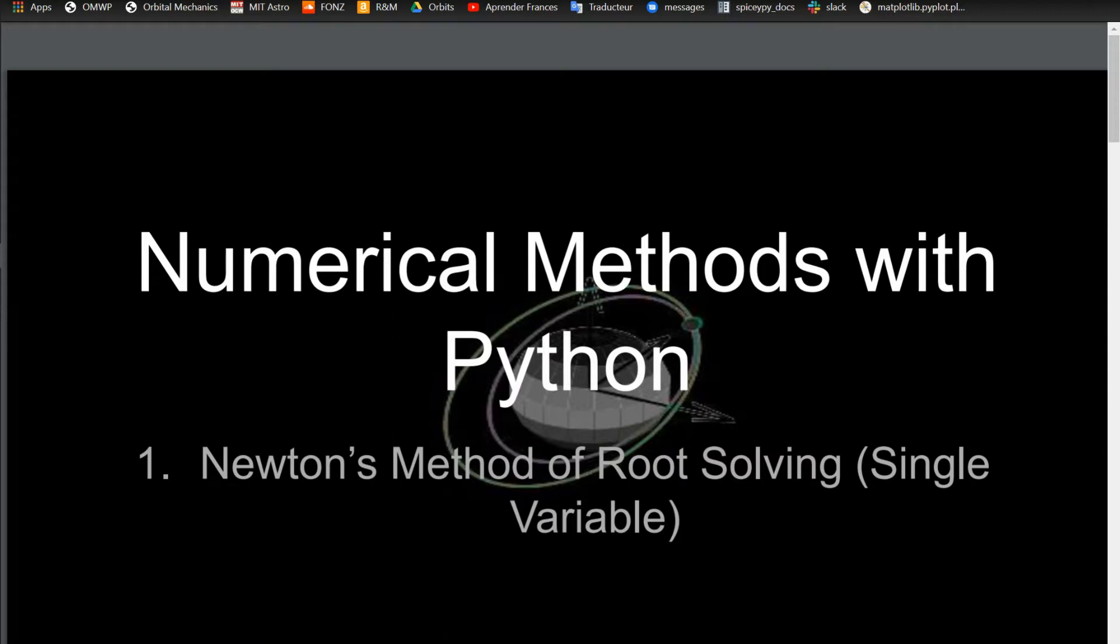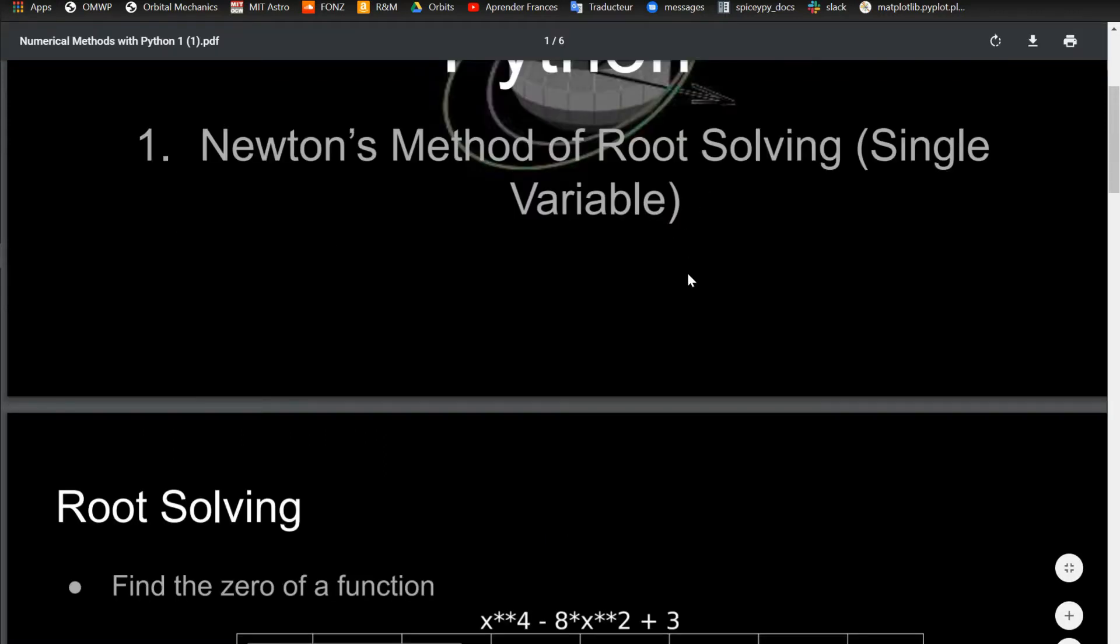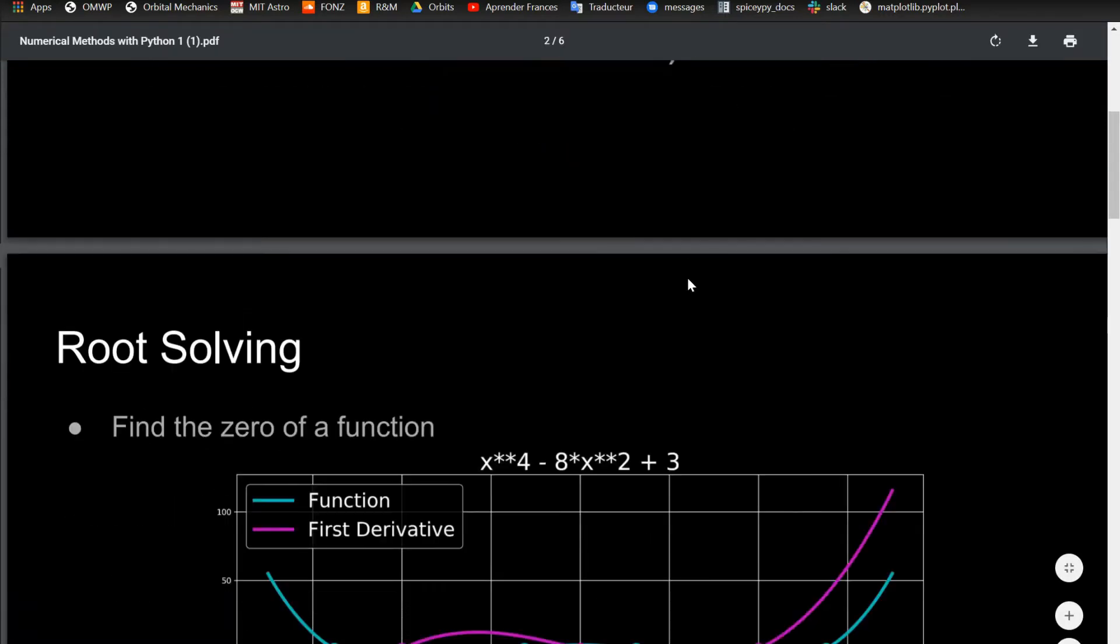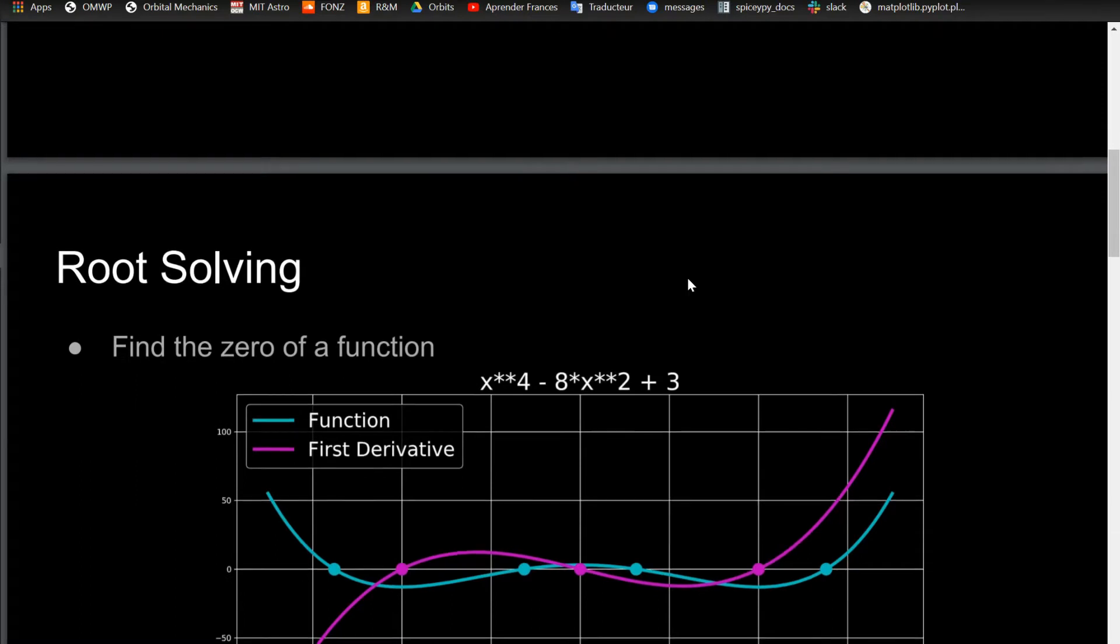Numerical methods have many applications in basically every STEM field, not just orbital mechanics, so I feel like this video series could be beneficial to a lot of people in all different types of STEM fields. For the first video, I'm going to be doing Newton's method of root solving for the single variable case. This is a very famous numerical algorithm in order to solve for the roots of a function. Right here I'm covering the single variable case, where later I will cover the multivariable case, which is a little bit more complicated.